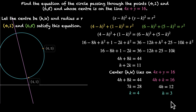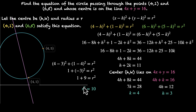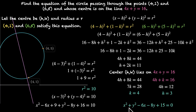Now it's time to find the radius. We can plug 3 comma 4 into one of the equations: 4 minus 3 squared plus 1 minus 4 squared equals r squared. This gives 1 plus 9 equals 10, so r squared is 10 and the radius is root 10. The equation is x minus 3 squared plus y minus 4 squared equals 10. We can also expand this into standard form: x squared plus y squared minus 6x minus 8y plus 15 equals 0.